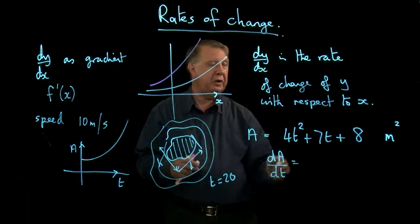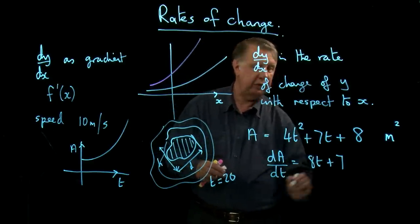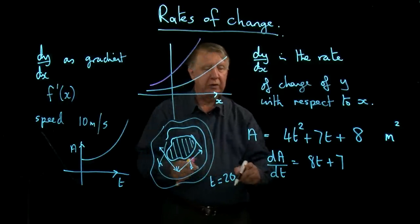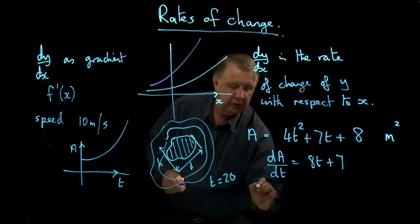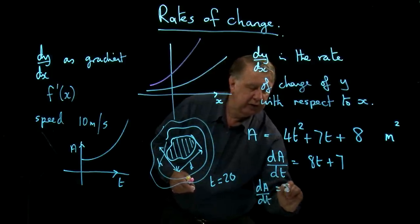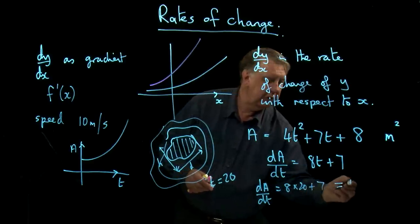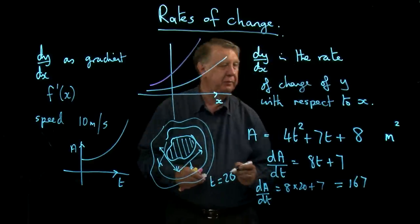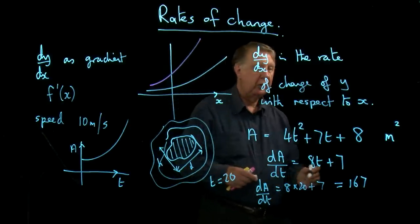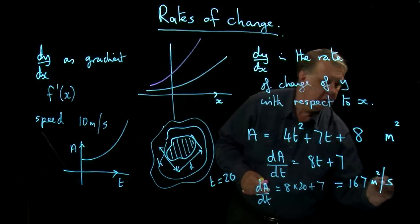So if I differentiate this, I get 8t plus 7. So when t is 20, dA by dt is 8 times 20 plus 7, which is 167 square metres per second.